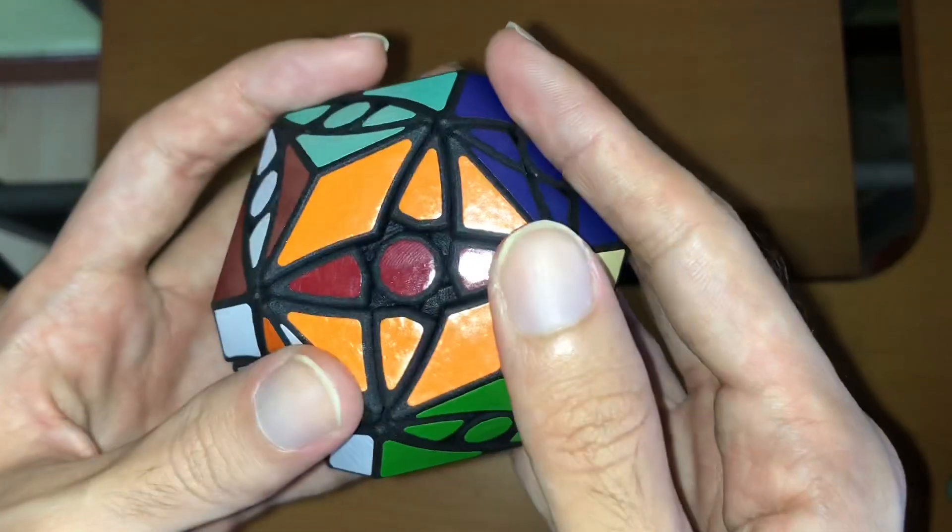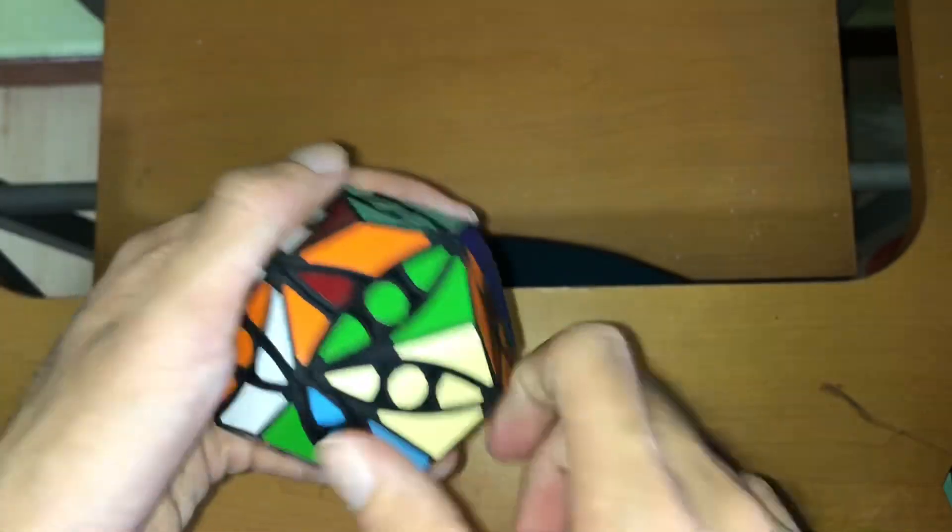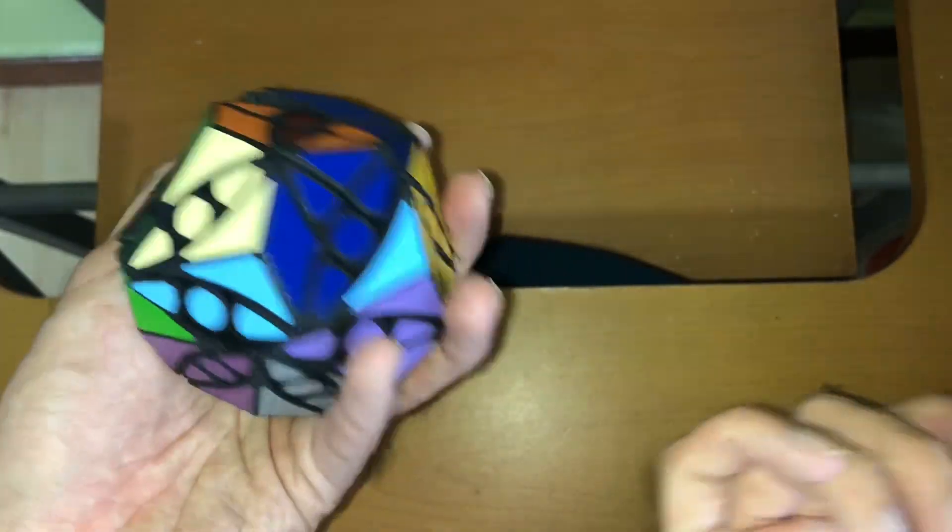then there's no chirality of these edge pieces anymore, so it doesn't matter and all the moves can just function as normal.